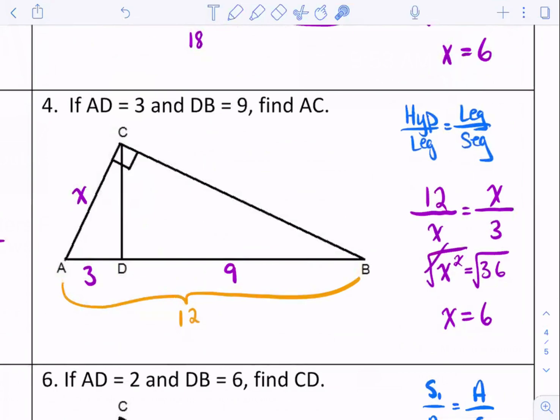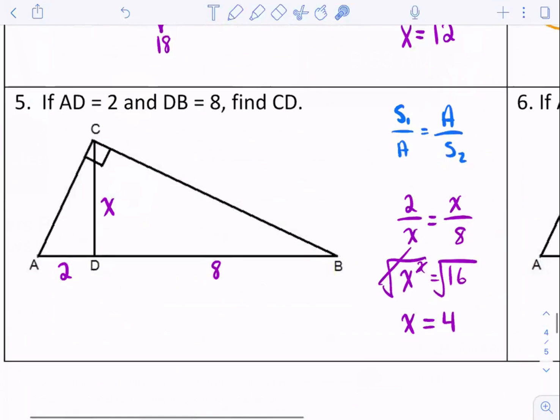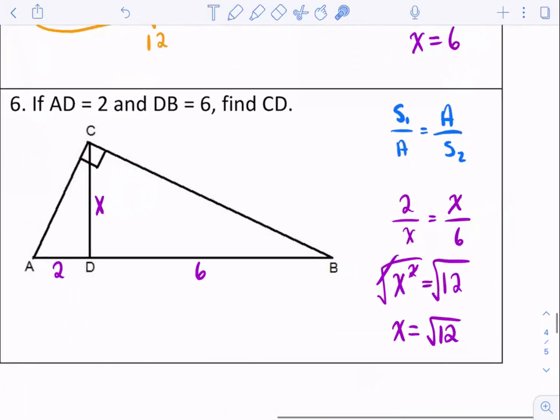In number 4, it was a Hills problem, but they did not give you the hypotenuse. You had to tell yourself, what is the total length here? 3 and 9 give me a total of 12. So that's some additional information you have to find on your own. Then for number 5, you get CD is 4. And then for number 6, you get CD is the square root of 12. Yes, you could just leave it as the square root of 12.